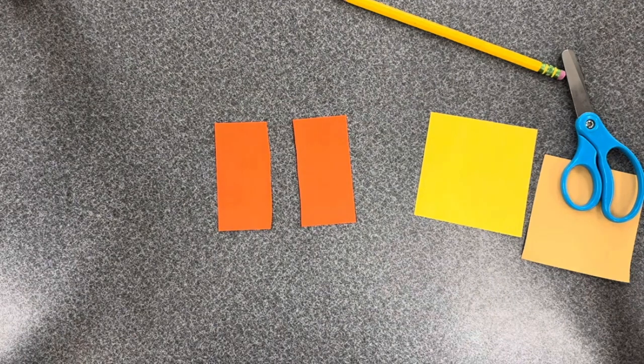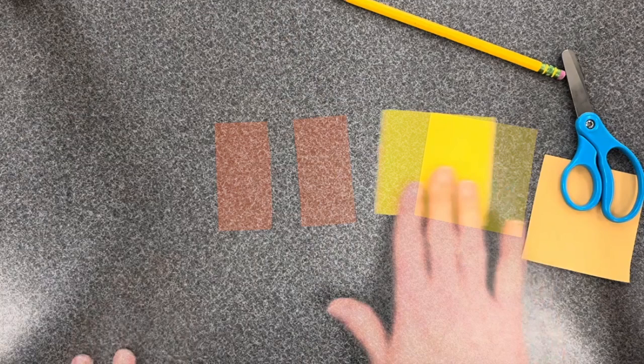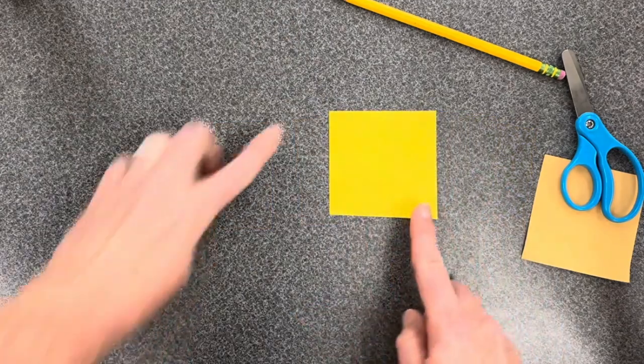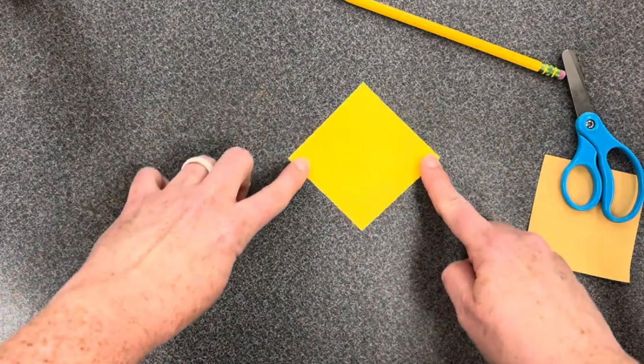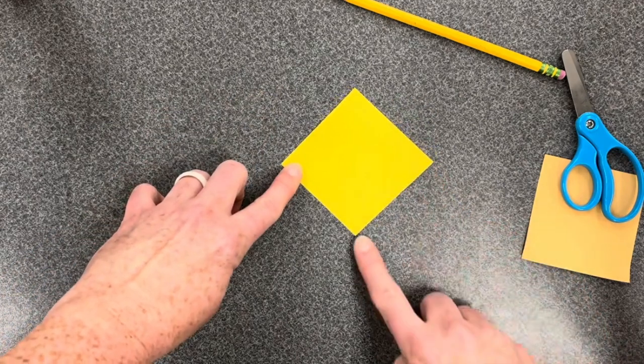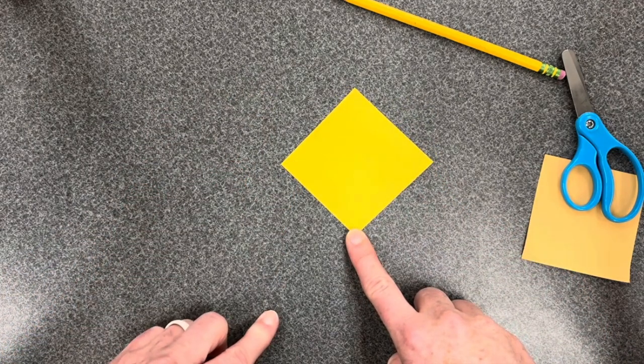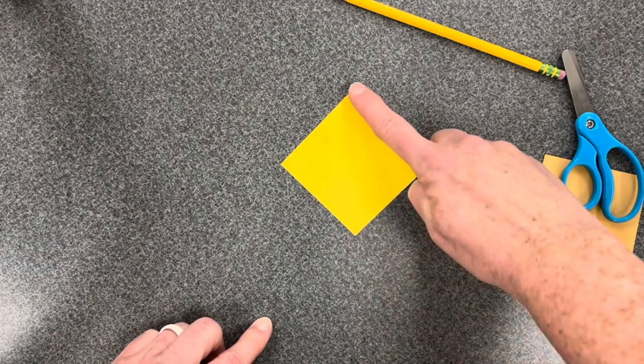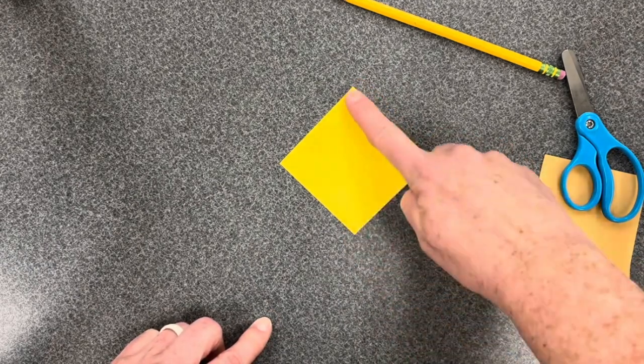Next we'll make two triangles. This time you'll begin with a square, but I want you to turn it so it looks a little more like a diamond. It's standing on its point. Now we're going to fold top to bottom, point to point.